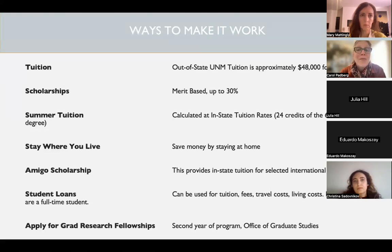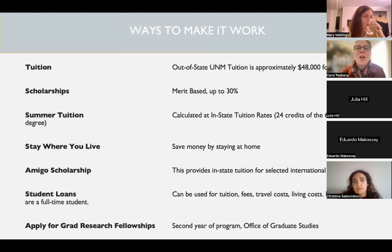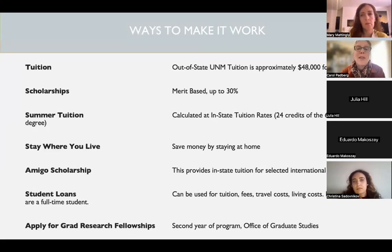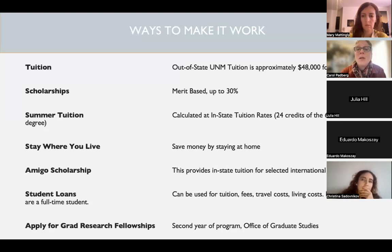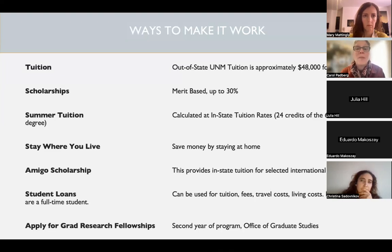Another way we try to keep tuition lower is that during the summers, everyone pays in-state tuition whether they reside in New Mexico or not. For out-of-state students, there's also the potential of receiving an Amico scholarship, which allows international students to pay in-state tuition. In the second year, we encourage all students to apply for independent funding from the University of New Mexico Office of Graduate Studies. Student loans can be used to cover costs beyond tuition such as travel and living expenses, and we encourage students to research local funding like Rotary Scholarships or community educational scholarships.